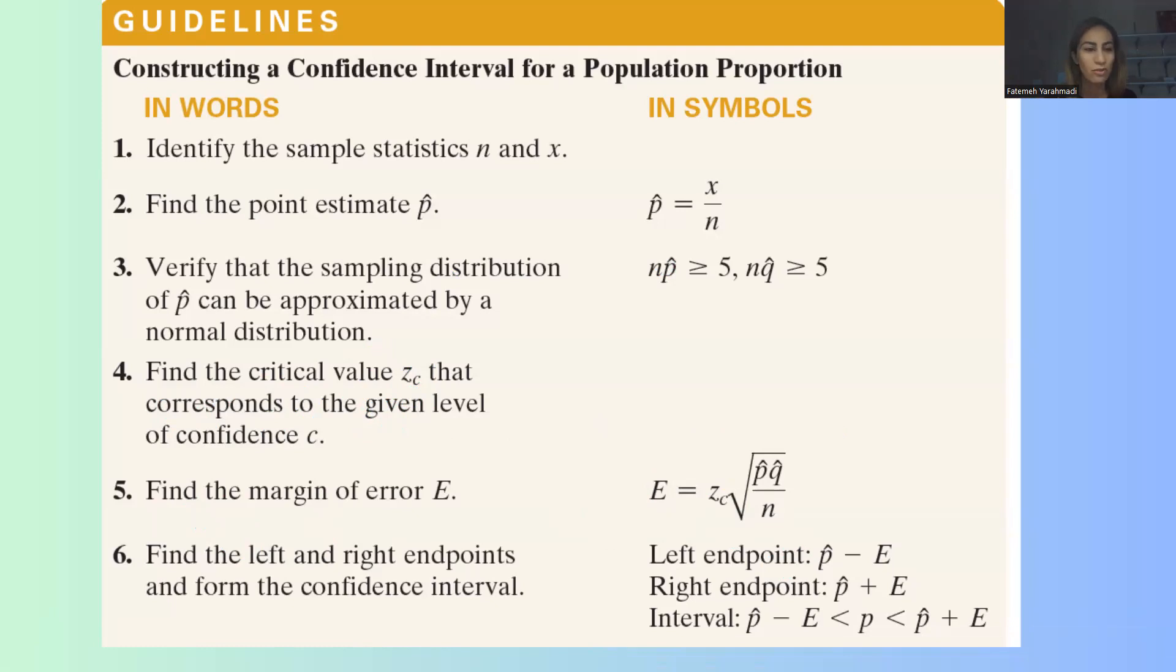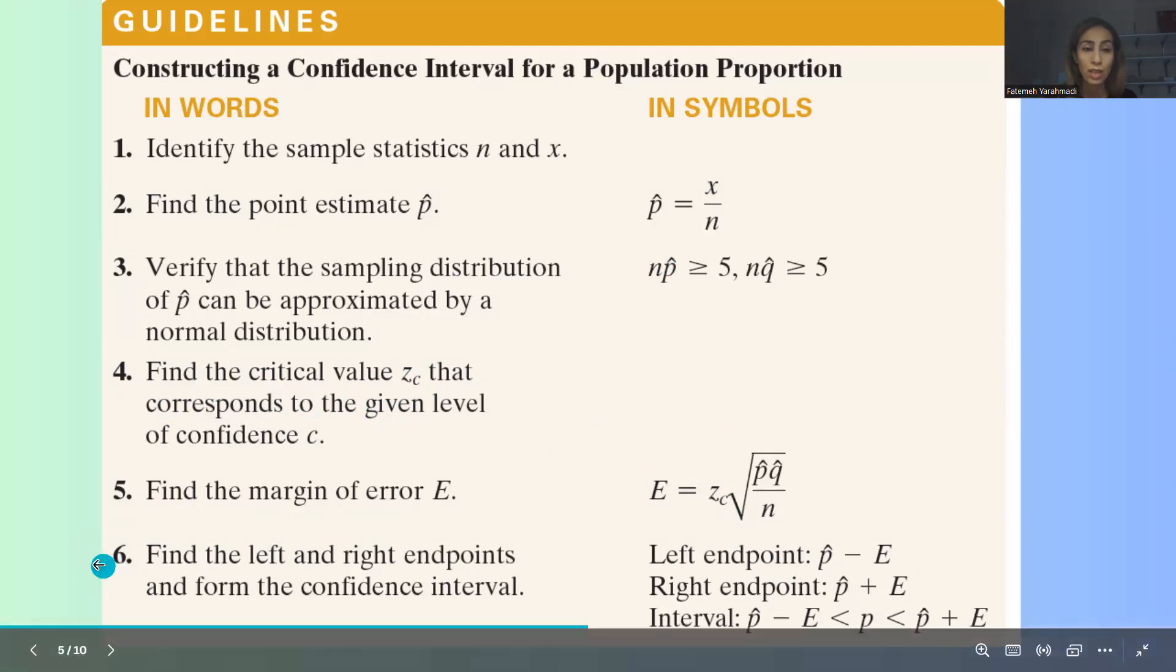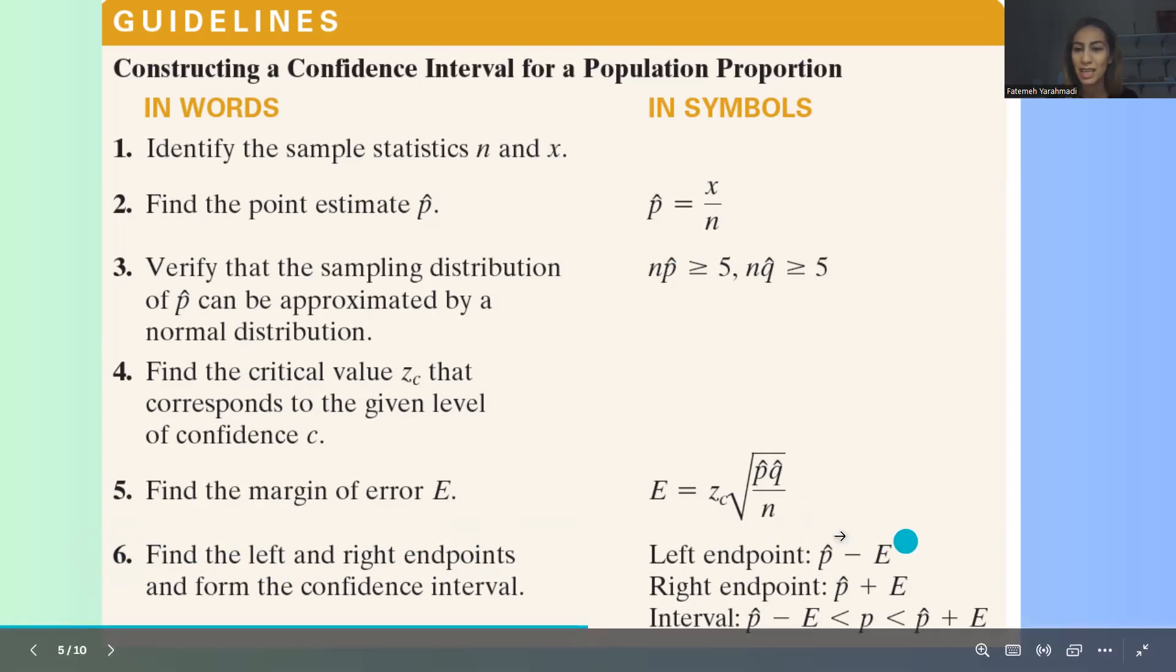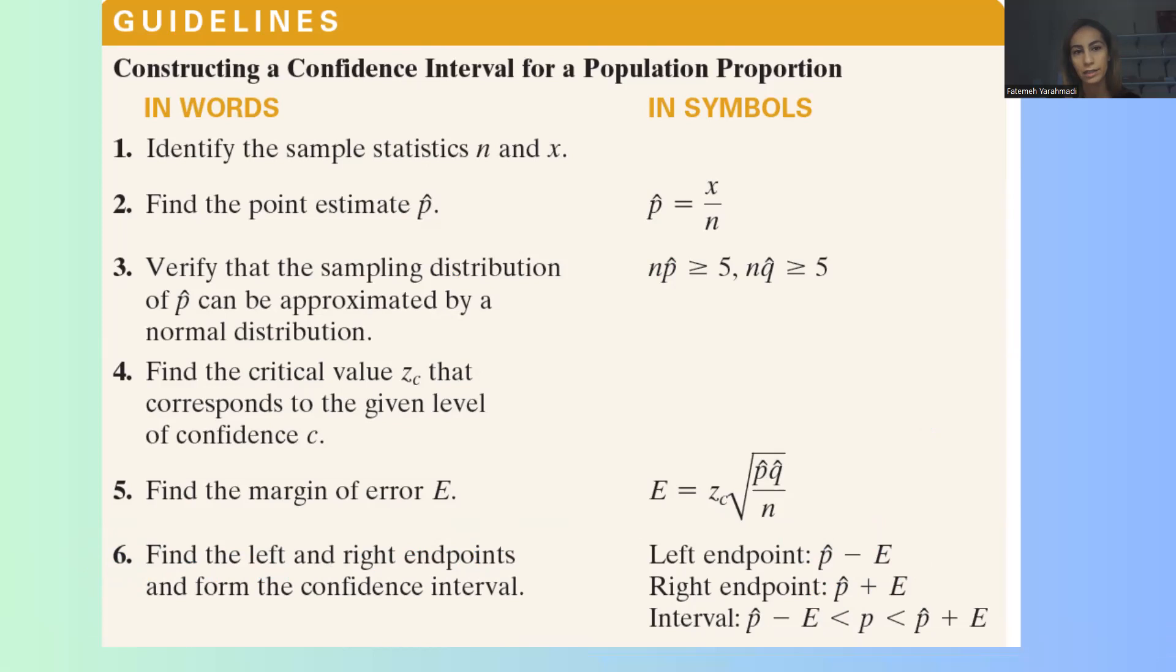Once we're done with all of these calculations, we can go to the last step. We find the left and right endpoints for our population proportion. What are those endpoints? The left endpoint is p-hat minus e and the right endpoint is p-hat plus e. So these are the guidelines to construct the confidence interval.